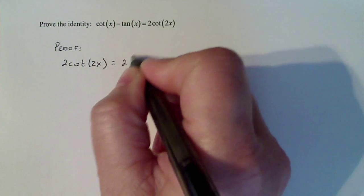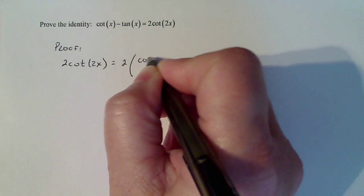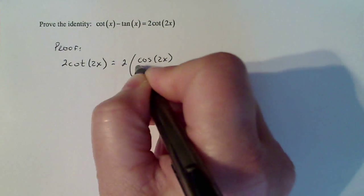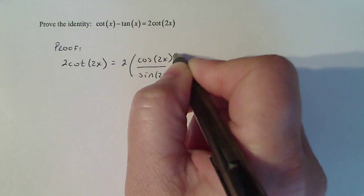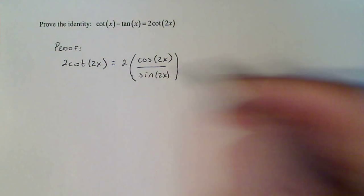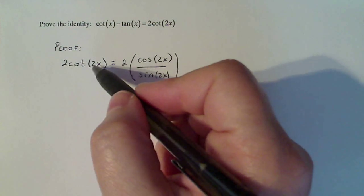That's going to be 2 times cosine of 2x divided by sine of 2x, because we know that cotangent is cosine over sine and the angle comes along.